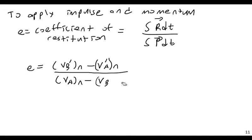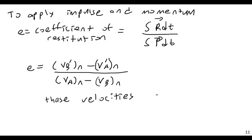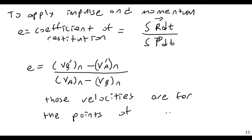These velocities are for the points of impact. So if the object is rotating, then different points on the body may have different velocities, but these velocities are for the points of impact, and this will be important. We'll work through a few examples.